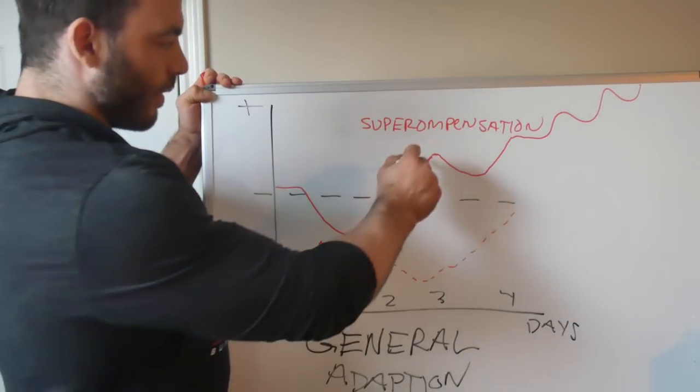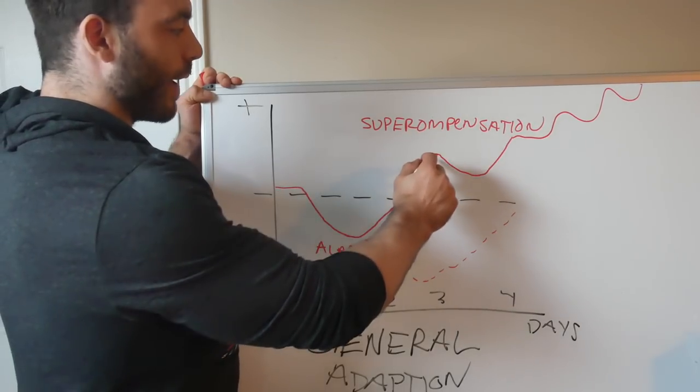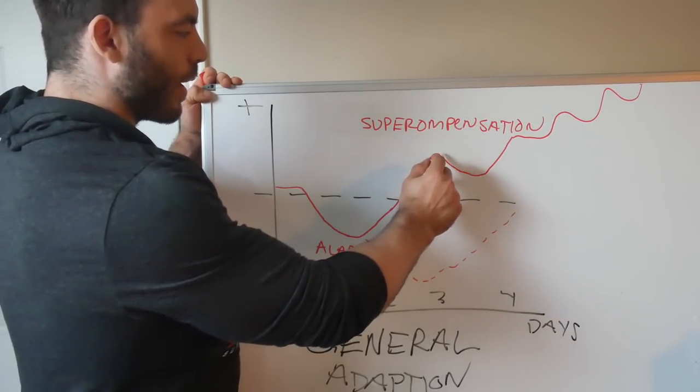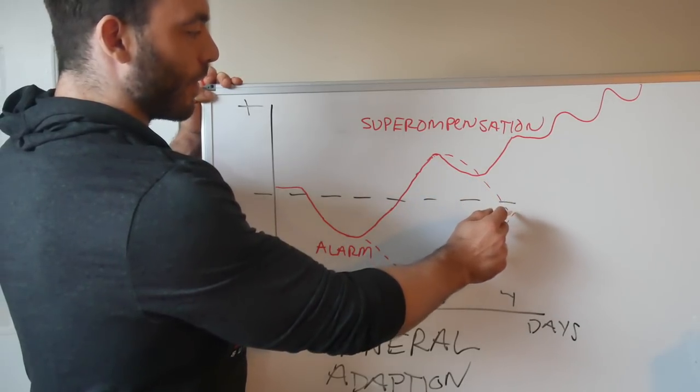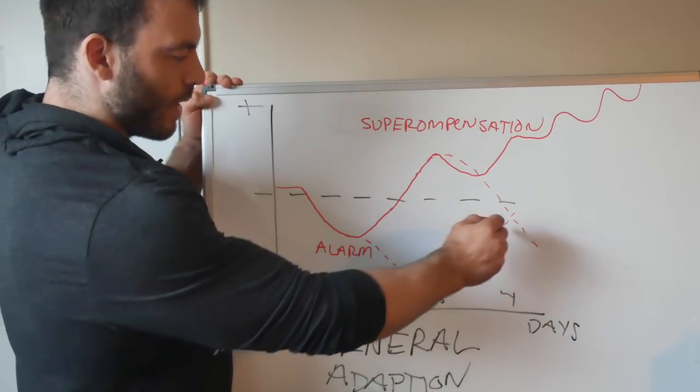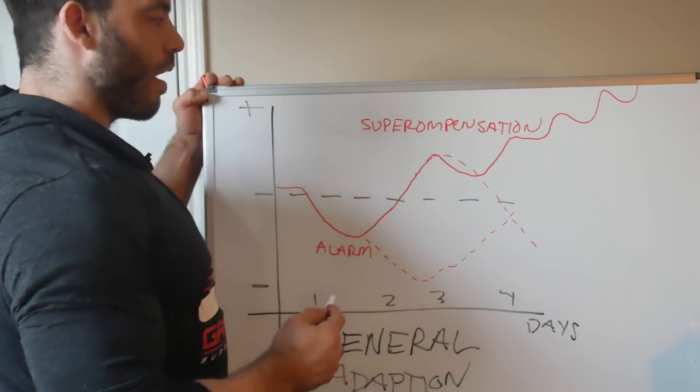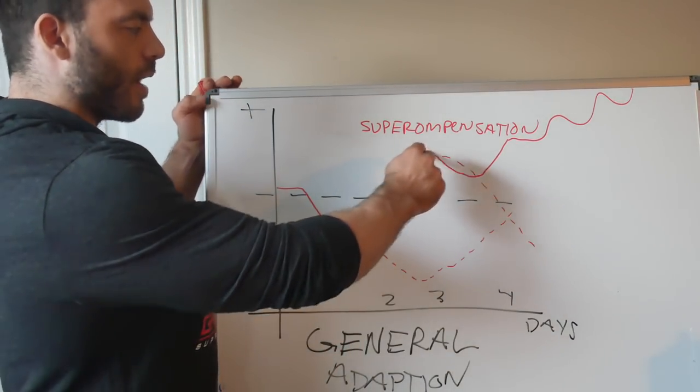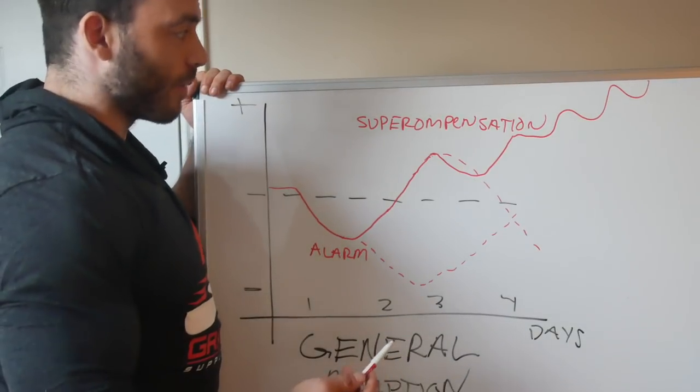The other risk you can see is actually this won't just keep going up forever if I don't train. What will happen is if I stop training, I'll start to see a decrease in performance as well. So right here at the dotted line, this area is overtraining, this area is undertraining. And obviously our goal is to not do either of those, but to stay in the supercompensation phase for as long as possible.